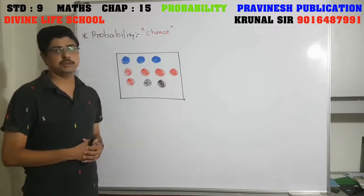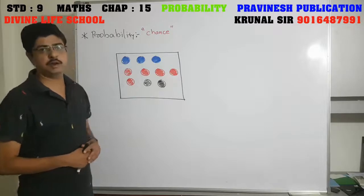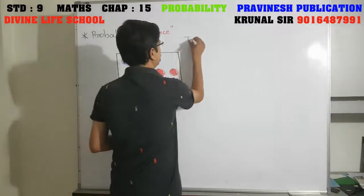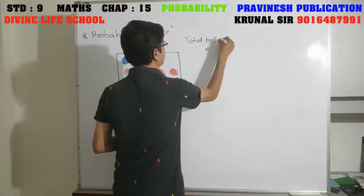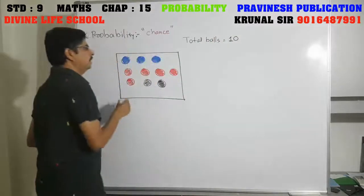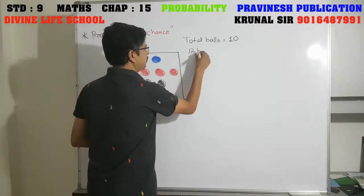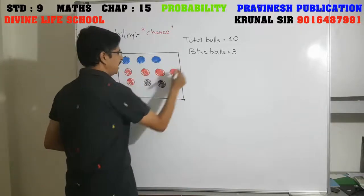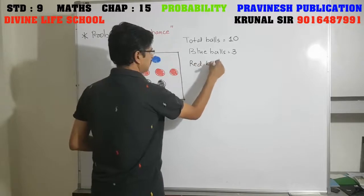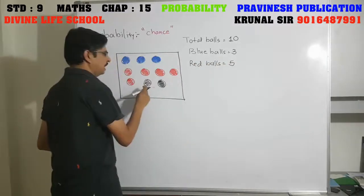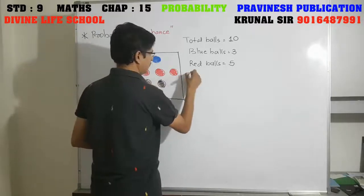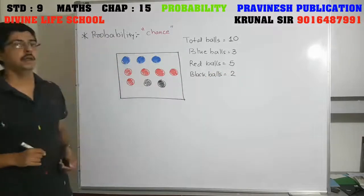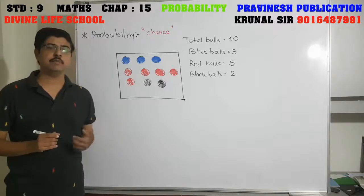For example, we have a box. In the box there are total 10 balls — 3 blue balls, 5 red balls, and 2 black balls. So total balls equals 10, number of blue balls equals 3, number of red balls equals 5, and number of black balls equals 2. Without looking into the box, we randomly pick up a ball.